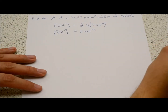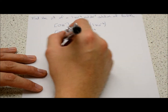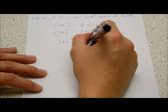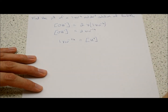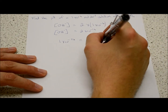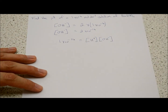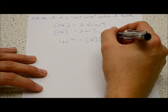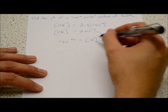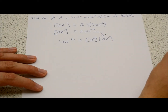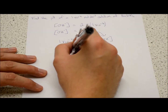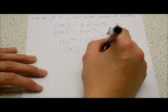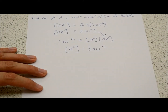Using the autoprotolysis of water, we know that Kw = 1×10⁻¹⁴ equals [H⁺] multiplied by [OH⁻]. Rearranging this equation and substituting the OH⁻ concentration gives us a hydrogen ion concentration of 5×10⁻¹¹ mol/dm³.